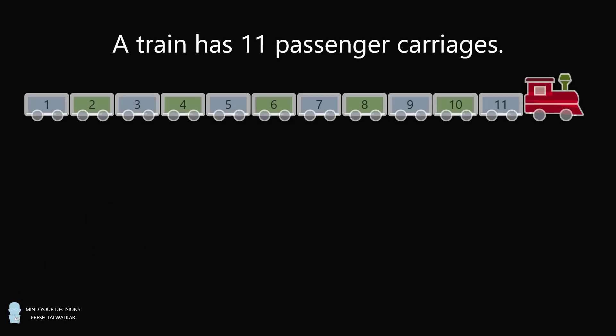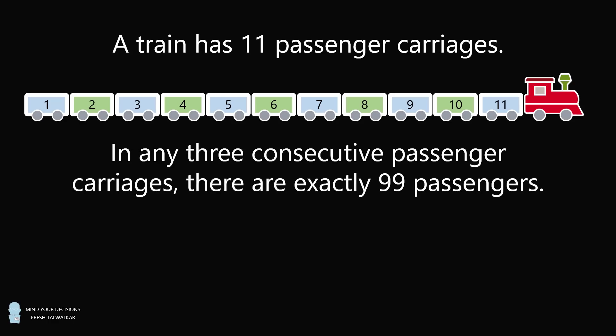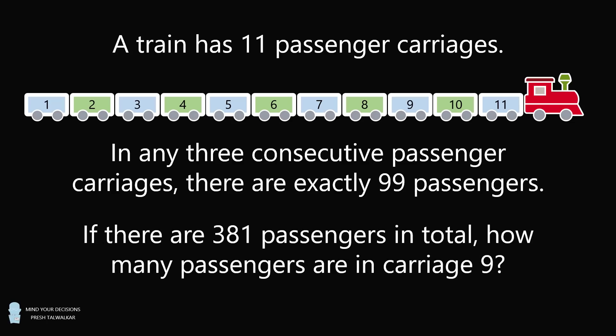Hey, this is Presh Tollwalker. A train has 11 passenger carriages numbered from 1 to 11. In any three consecutive passenger carriages, there are exactly 99 passengers. If there are 381 passengers in total, how many passengers are there in carriage number 9?